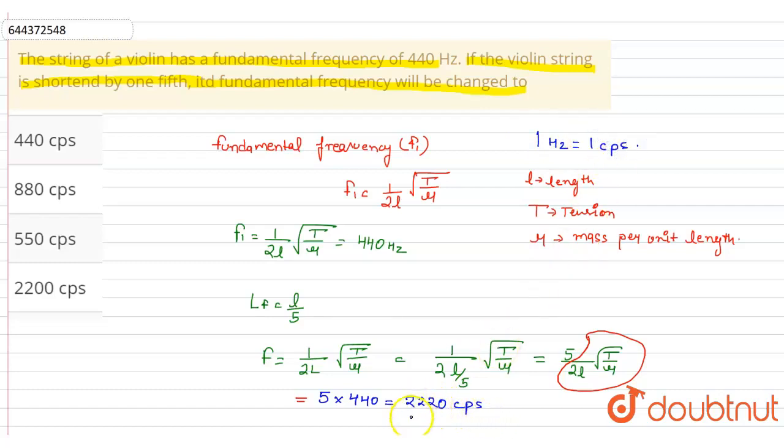So our answer is 2220 cycles per second. Option D is correct. Thank you.